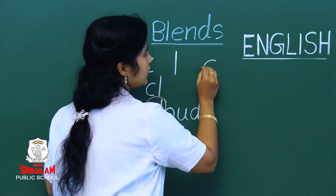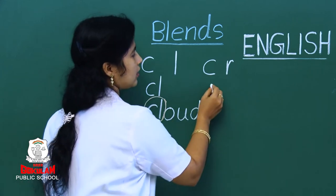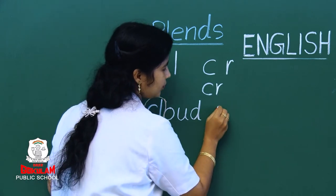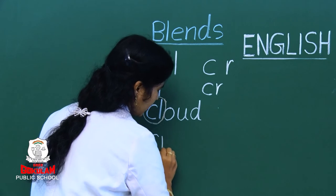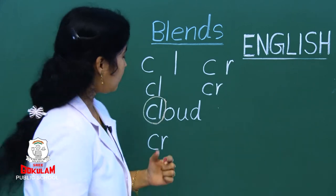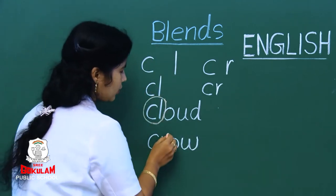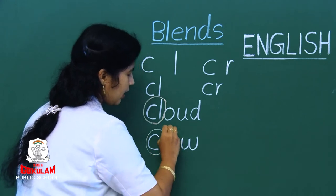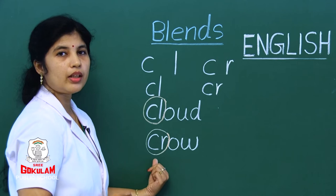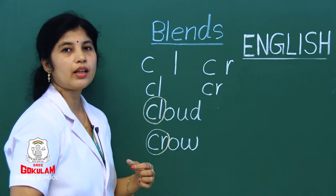Now I will show you one more: C and R. We are going to blend these two letters. How do we pronounce? K, R. Which word do you know? Crow — C, R, O, W — crow. Which two letters are blended? C and R — both letters come in the beginning — that is called beginning consonant blend.